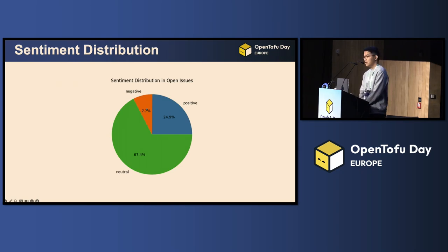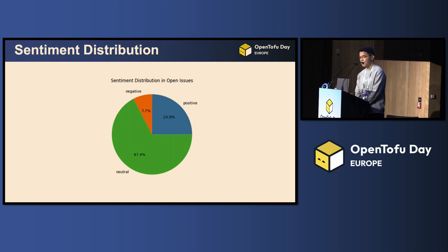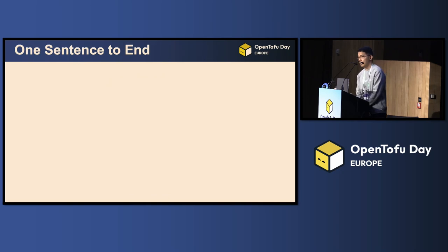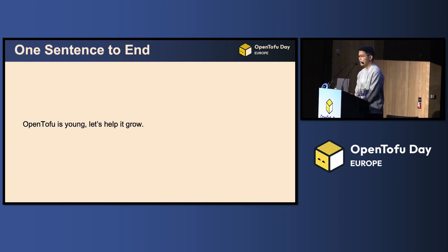If we try to do some sentiment analysis on those open issues, we can see that some — although not a large portion — are marked as negative. I think as the OpenTofu community, we can check those negative issues to see if there is anything yet to be resolved, and if we can find some solution there. These are my humble ideas to open discussion. Let me put it in one sentence to end: OpenTofu is young, so let's help it grow.